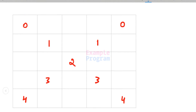If we want, we can start the count from 0 also. So this will be the 0th row, 1st row, 2nd row, 3rd row, and 4th row. Similarly, 0th column, 1st column, 2nd column, 3rd column, and 4th column. Here we are just starting the count from 0.